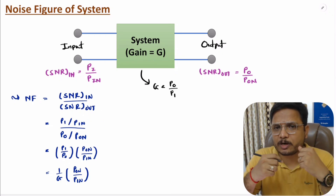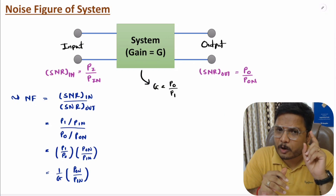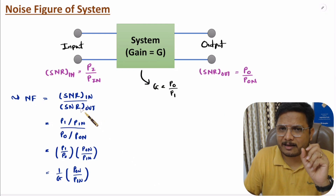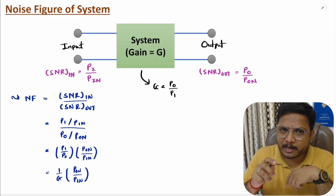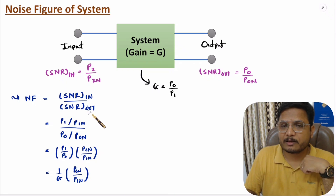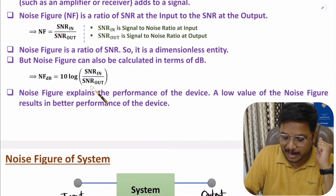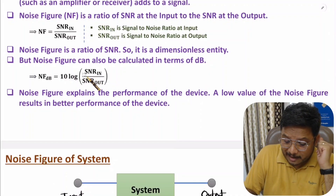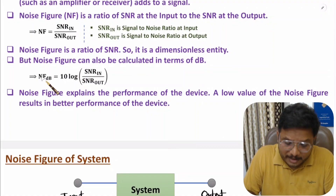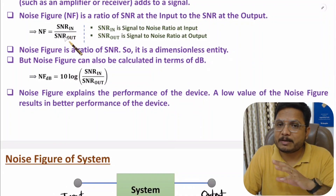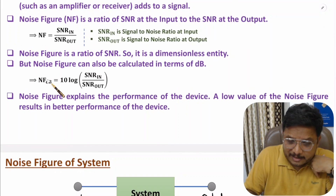There is some confusion among students about noise factor and noise figure. Both are the same — noise factor is simply the ratio, and noise figure is expressed in dB. But in different books, different notations are used. Just remember: noise figure is a ratio of SNR at input divided by SNR at output. In terms of dB, it is 10 log of that ratio, or equivalently SNR_input(dB) minus SNR_output(dB). It is a dimensionless entity, but for large numbers we represent it in dB.